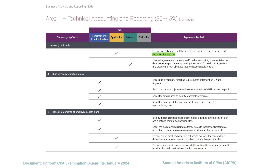Then we move to public company reporting topics. We need to know Regulation S-X and what it entails, Regulation S-K, XBRL business reporting and its purpose, and the requirements for reportable segments. From there, we have the financial statements of employee benefit plans — specifically the difference between a defined benefit pension plan and a defined contribution plan, and the differences between the statement of changes in net assets available for benefits and the statement of net assets available for benefits.